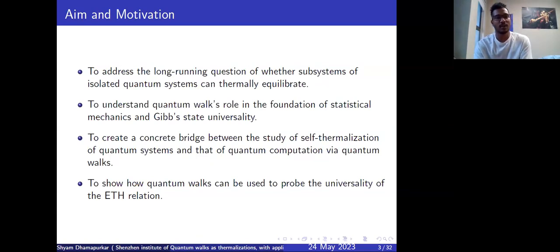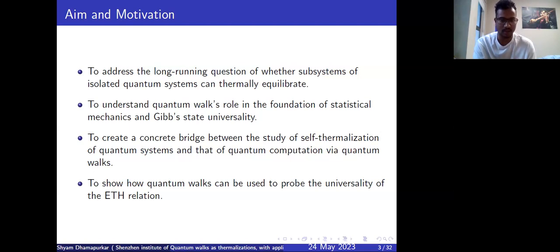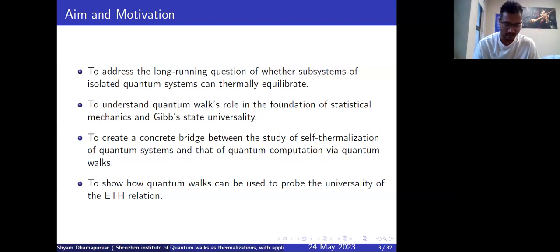The aim and motivation for this research is to address the long-running question of whether the subsystems of isolated quantum systems can thermally equilibrate, and to understand the role of quantum walks in the foundation of statistical mechanics. We also investigate the question about the universality of the Gibbs state, and to create a concrete bridge between the study of self-thermalization of quantum systems and quantum computation. Lastly, we aim to show how quantum walks can be used to probe the universality of the ETH relation — the eigenstate thermalization hypothesis.